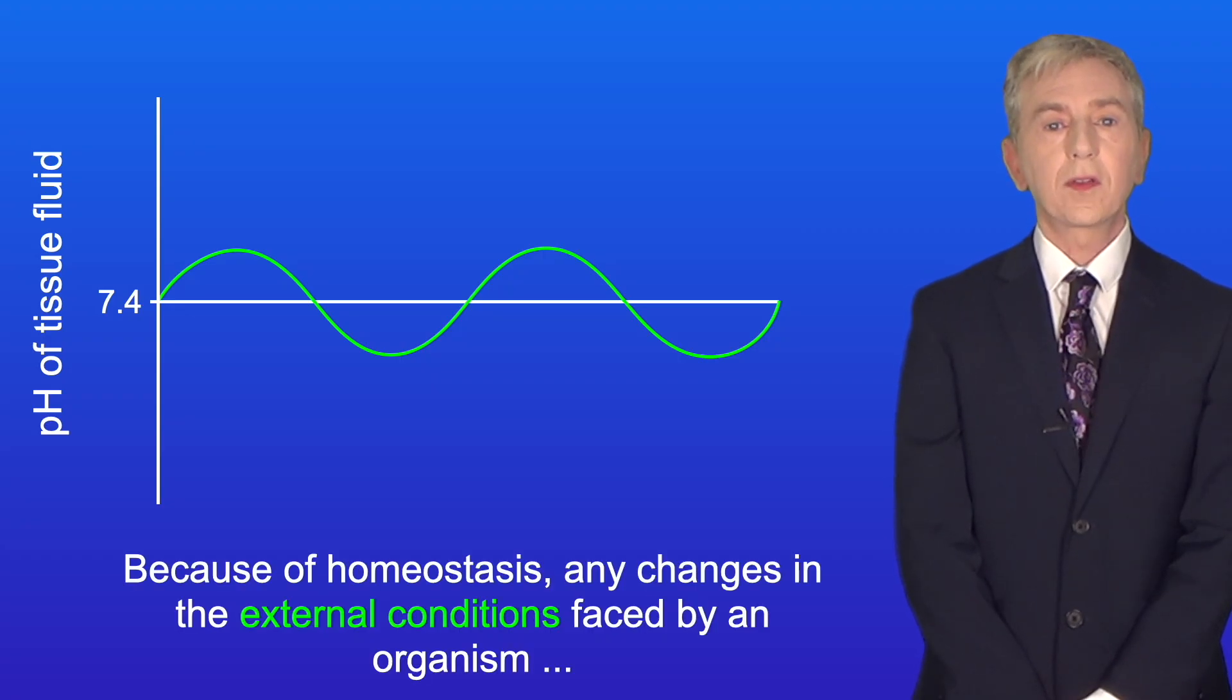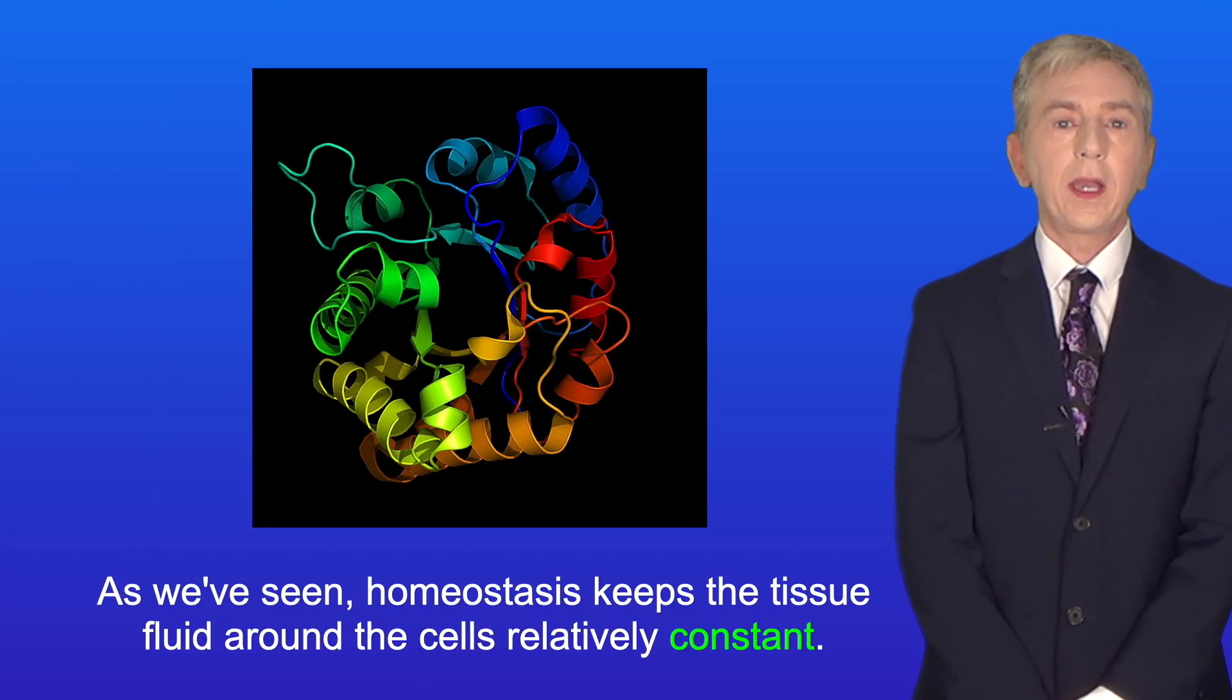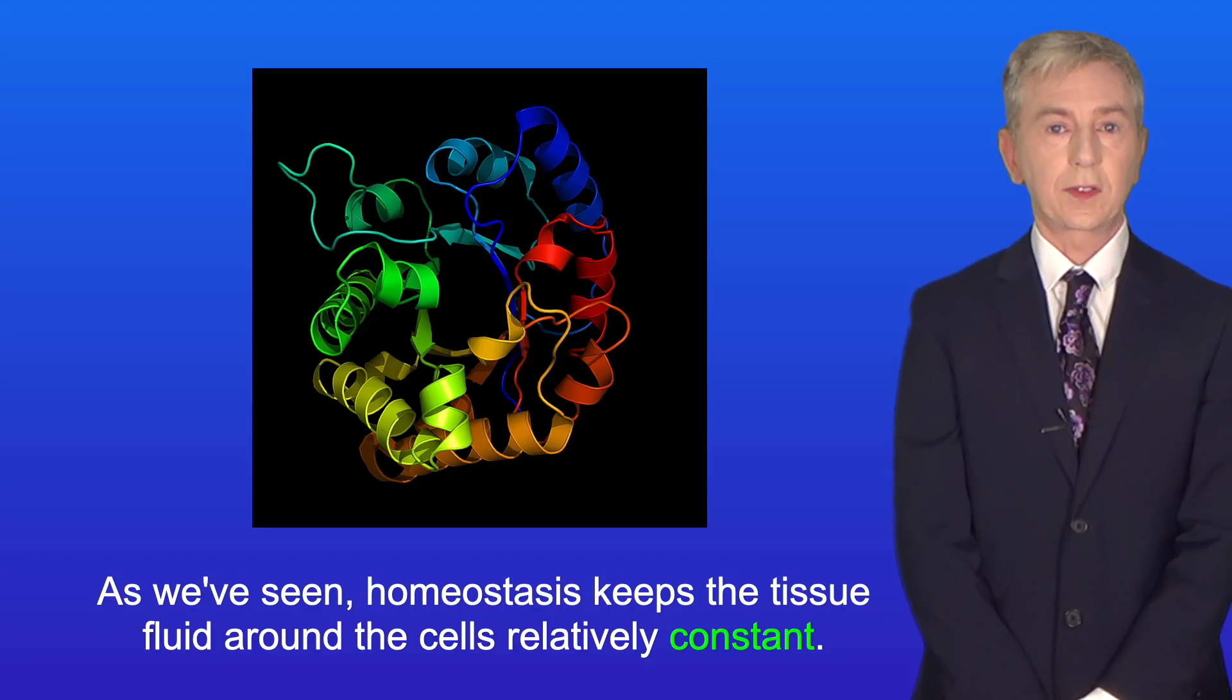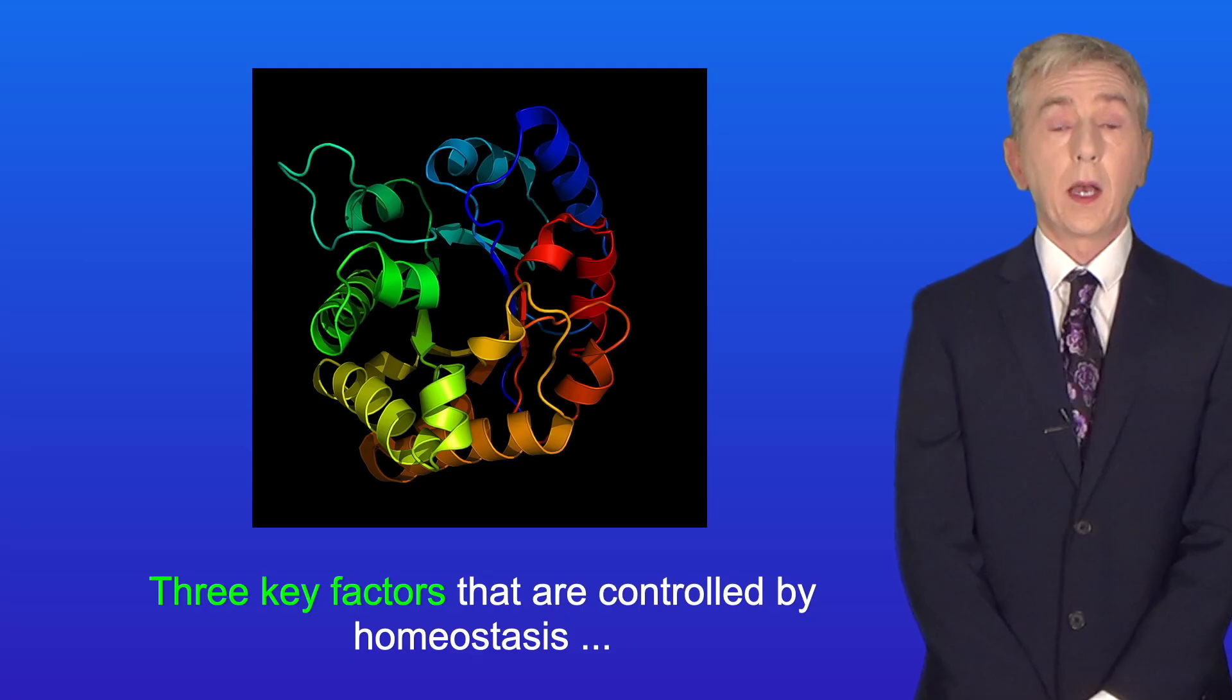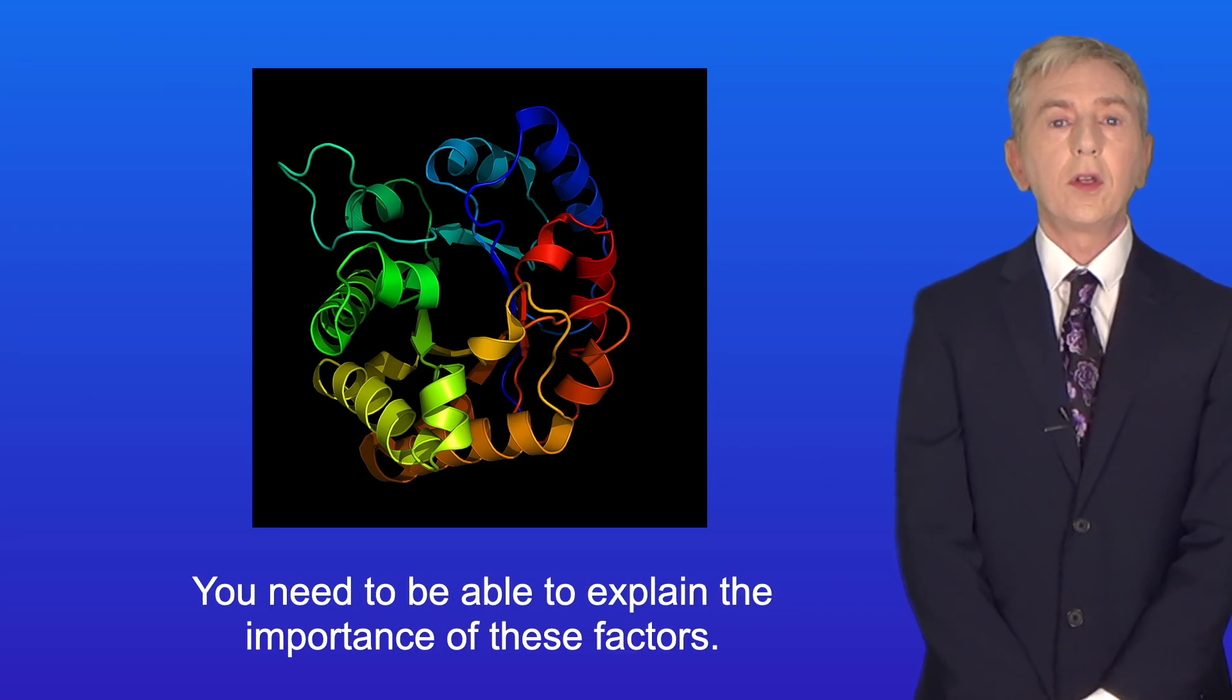Because of homeostasis, any changes in the external conditions faced by an organism have a very limited effect on the cells. So as we've seen, homeostasis keeps the tissue fluid around the cells relatively constant. Now three key factors that are controlled by homeostasis are the pH, temperature, and water potential of the tissue fluid. And you need to be able to explain the importance of these factors.